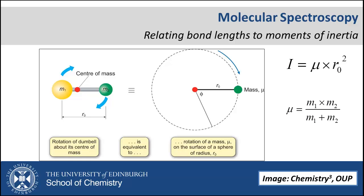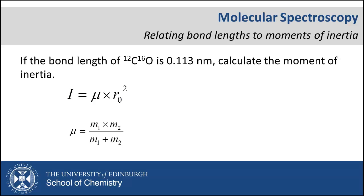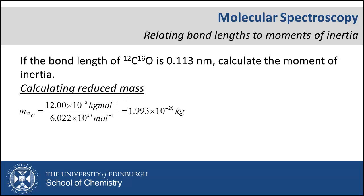Let's apply this to an example. Here we are given a bond length for CO and we wish to calculate the moment of inertia. To relate the two we need to calculate reduced mass. We can calculate the individual masses of each atom in SI units of kilograms as shown by expressing the atomic mass in kilograms per mole and hence in kilograms.